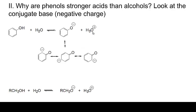Why are phenols stronger acids than alcohols? Looking at the conjugate base: phenol in water forms the phenoxide and H3O+. The conjugate base of the alcohol, on the other hand, has a negative charge stuck on oxygen with no resonance — just one structure for the alkoxide RCH₂O⁻. But the phenoxide negative charge can resonate into the benzene ring, giving four resonance structures altogether. So phenols are much stronger acids because the conjugate base is stabilized by resonance into the ring.